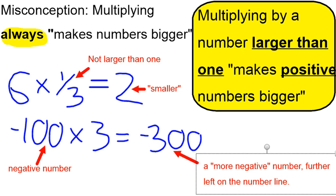In this case, starting with a negative and multiplying it by a number bigger than 1 gives us something which is more negative. So we need to be careful about what we mean by bigger here.